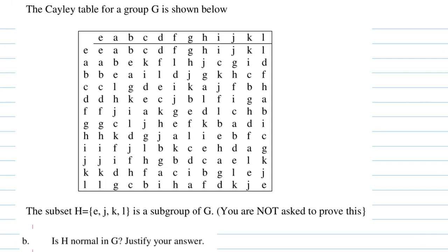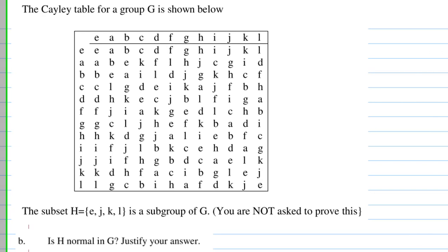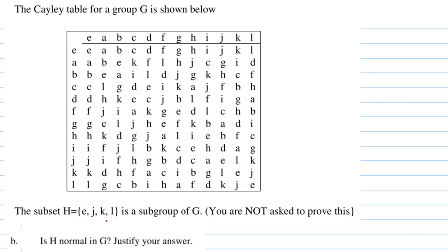Hi, for this recording we are given a subgroup H={e,j,k,l} of G when the Cayley table of G is given. We are asked to check if this subgroup is normal in G and justify our answer.